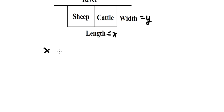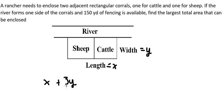...will have x plus 3y. Why do we have number three? Because we have one, two, three widths. Why do we have only one x? Because we just have this one length. However, on the river we don't need to use fencing, that's why we just have only one x.